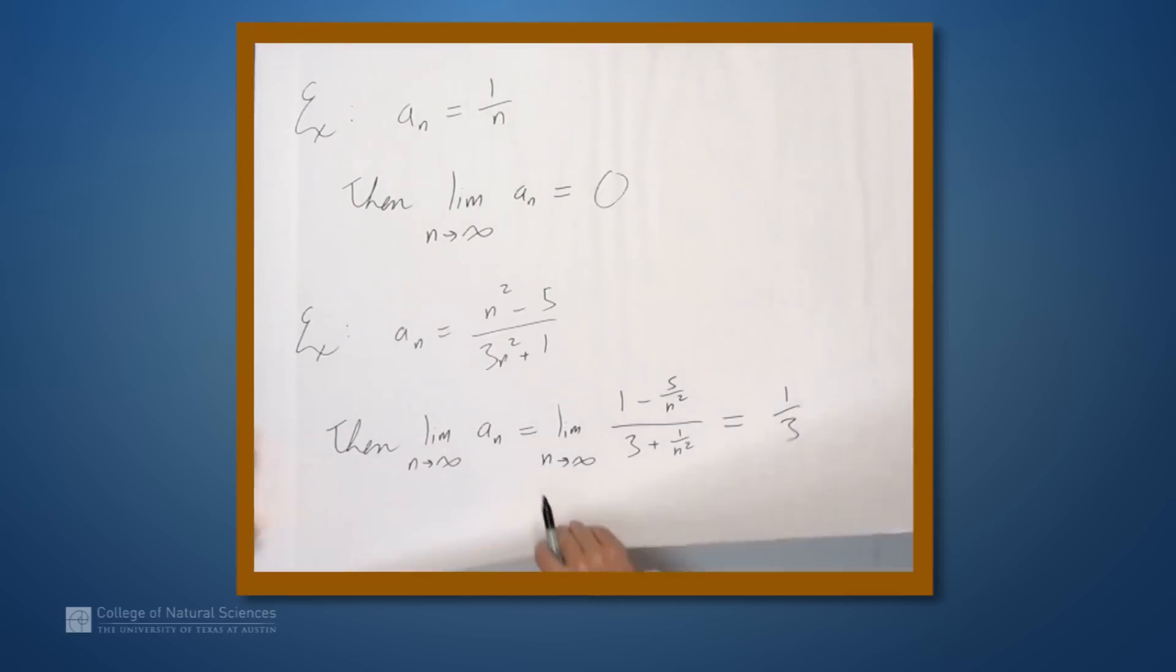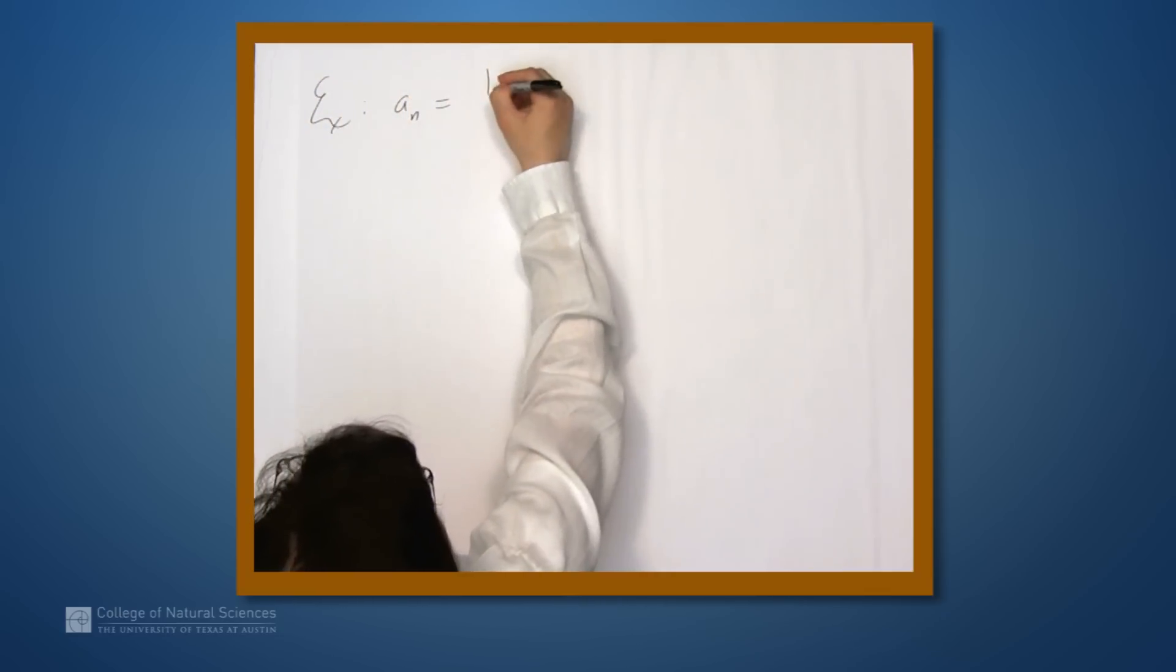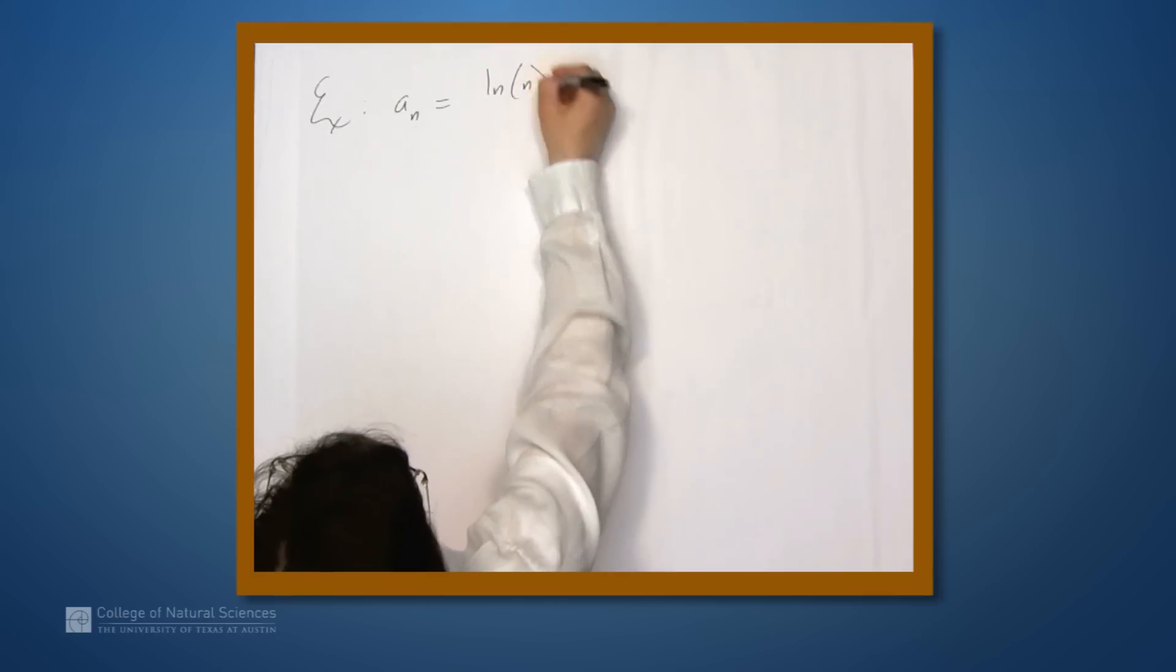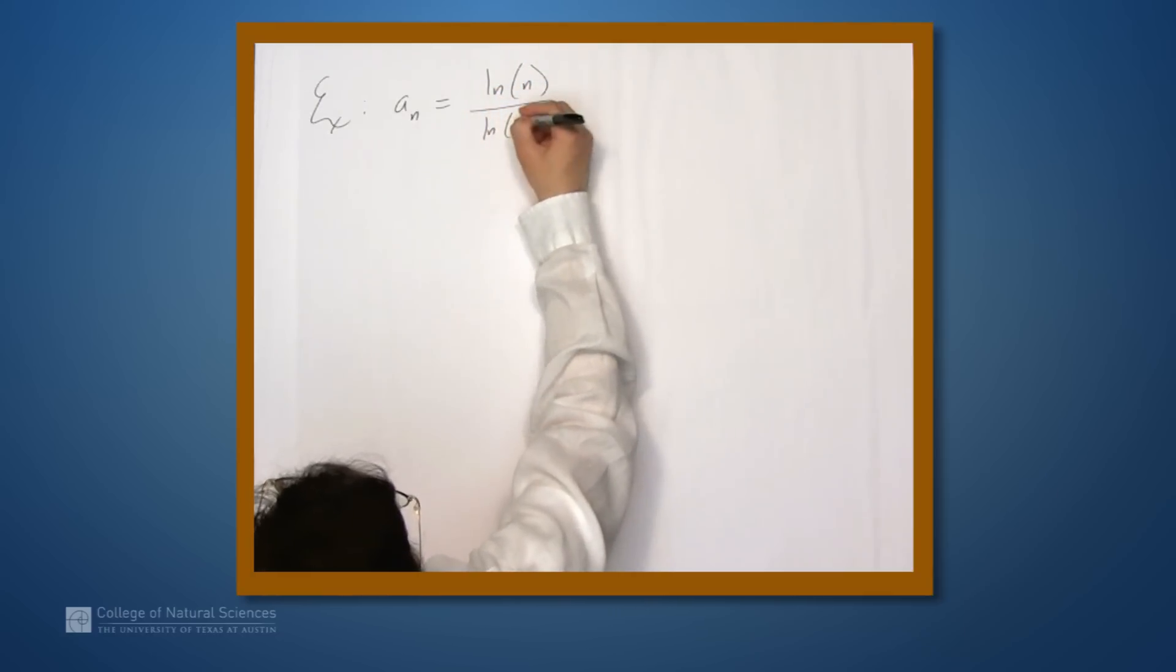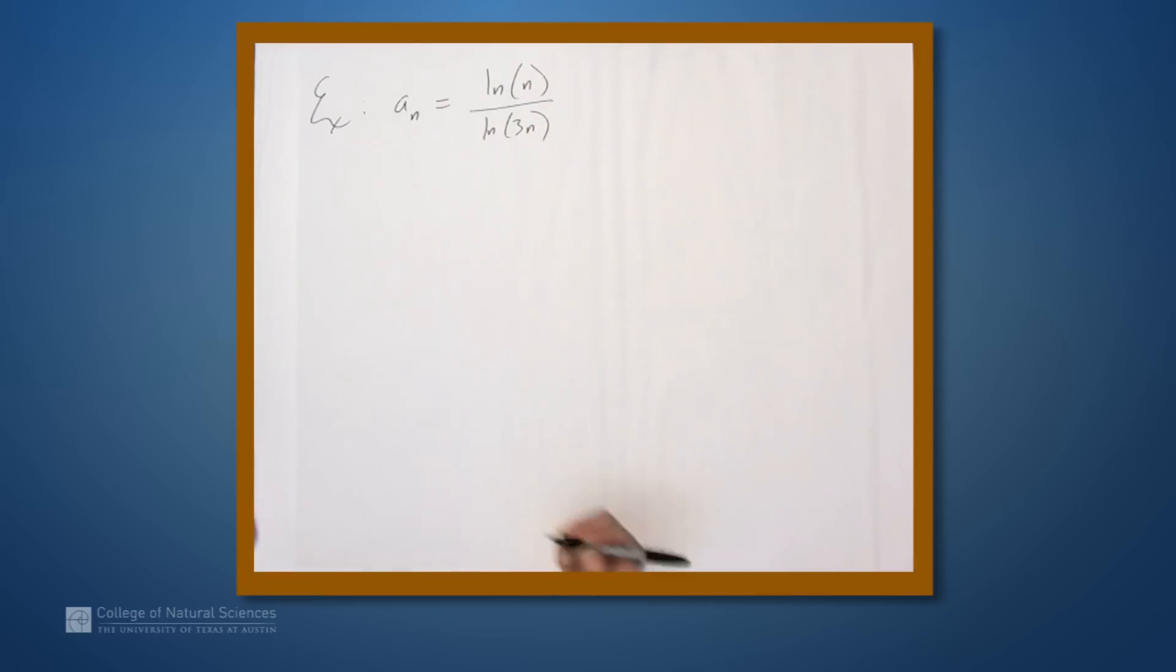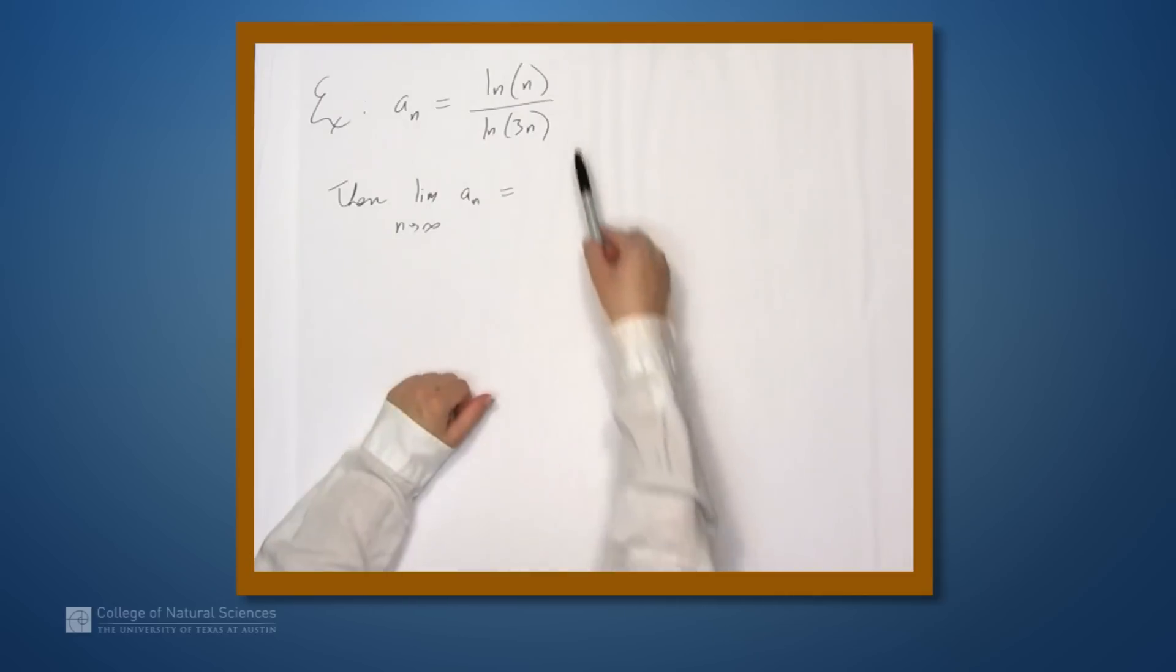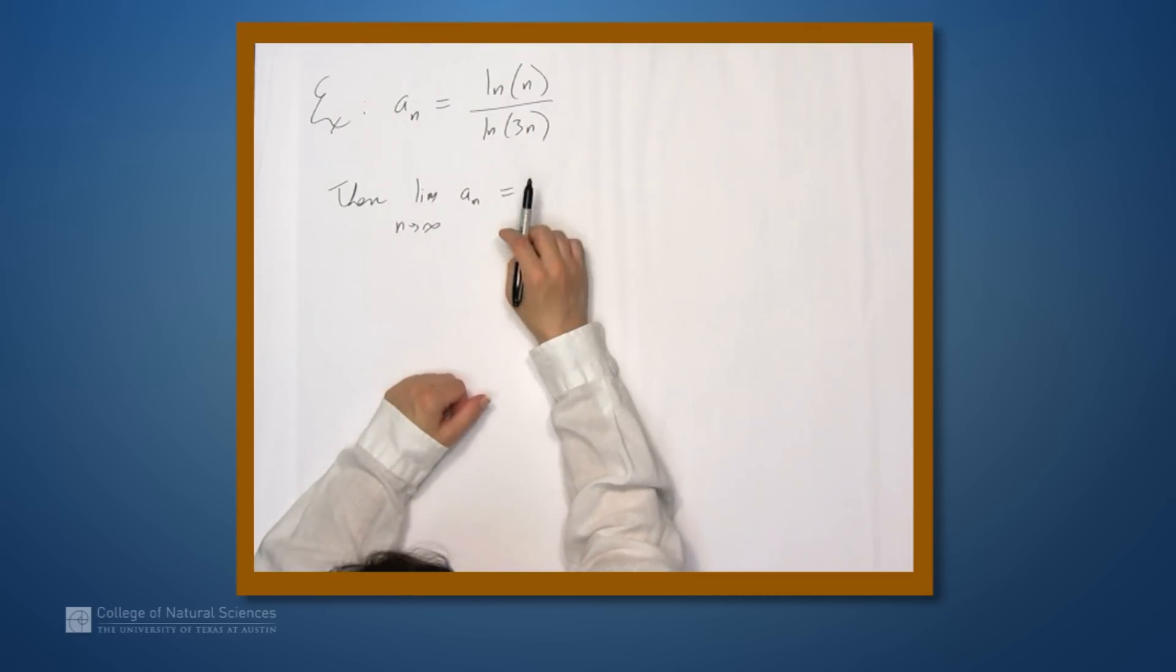Let's look at another example. So now let's set a_n equal to the natural log of n over the natural log of 3n. So what can we do? So the limit as n goes to infinity of a_n is the limit of this expression, and we have to manipulate this somehow so we can simplify it.